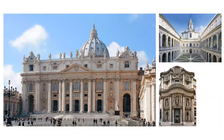The Baroque period occurred between the late 16th and early 18th century, emerging in Rome. It is characterized by a dramatic theatrical style, evoking emotion and complexity exhibited in art, architecture, music, and other cultural regards.